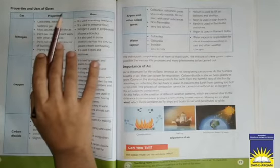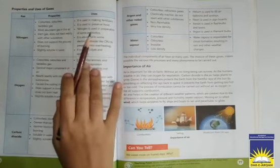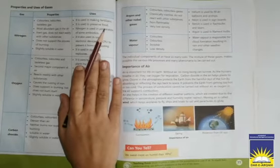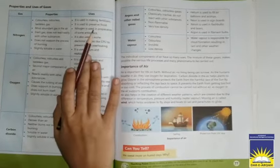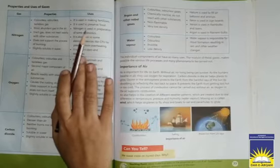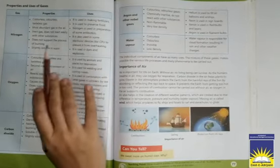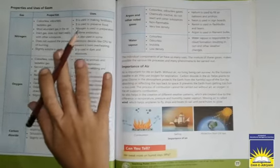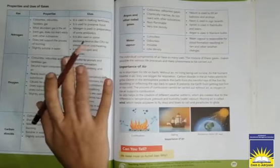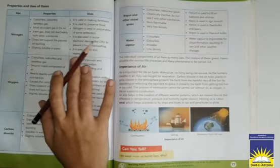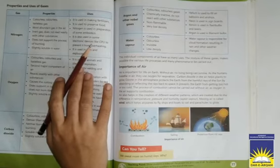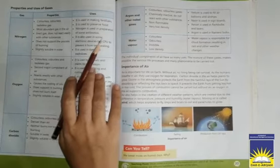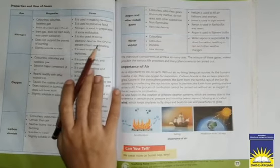Basically nitrogen gas is used in making fertilizers. It is used to preserve food. Nitrogen is used in preparation of some antibiotics. It is also used in some electronic devices like CPU to prevent it from overheating. It is used in dyes and explosives. Basically fertilizers ke tor par, antibiotics mein aur food preserve karne ke liye, CPU ko cool rakhne ke liye aur dyes aur explosion ke liye use kiya jata hai. Now we are going to discuss about properties of oxygen.